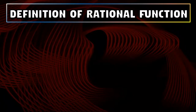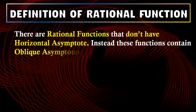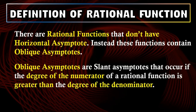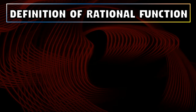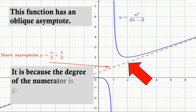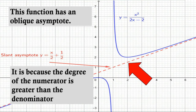Some rational functions don't have any horizontal asymptote, but they have the so-called oblique asymptote, sometimes called the slant asymptote. It occurs if the degree of the numerator is greater than the degree of the denominator. Like this graph — f of x is equal to x squared over 2x minus 2. This graph has an oblique asymptote because the degree of the numerator, which is 2, is greater than the denominator's, which is 1.